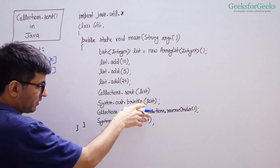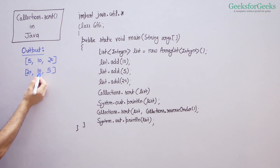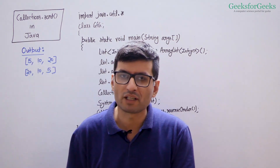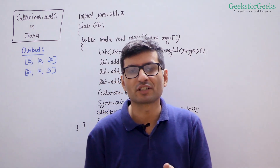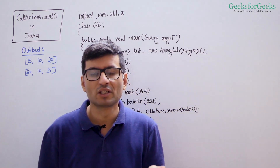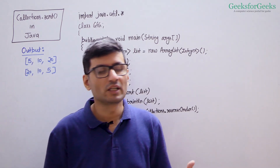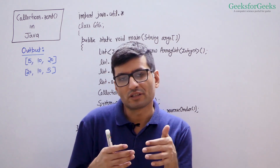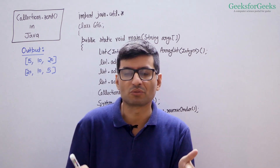Then we are sorting this list in reverse order, and we are going to get 20, 10, 5. An important note: wrapper classes implement the Comparable interface. So wrapper classes like Integer and Character have a compareTo function inside them, which can be used to compare two integers to decide which one should go first. Collections.reverseOrder uses this compareTo function and returns a comparator that does the reverse of what is written in the compareTo of these classes.